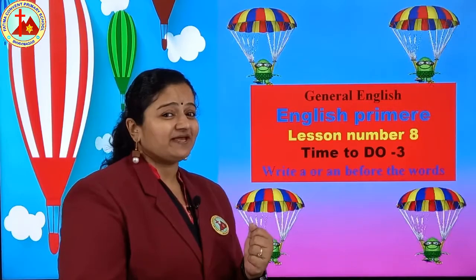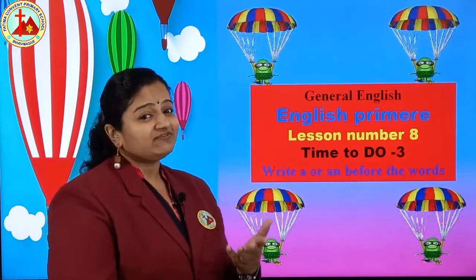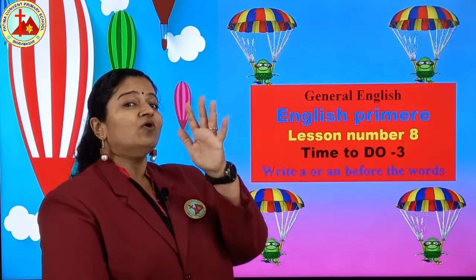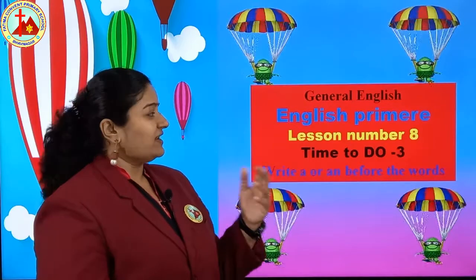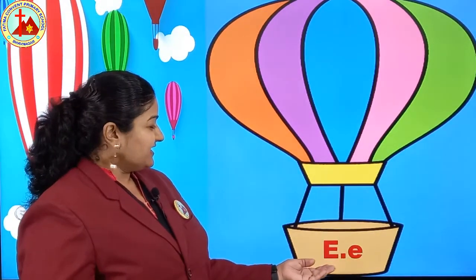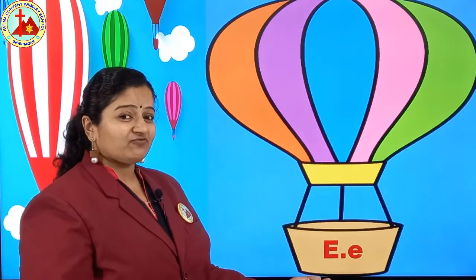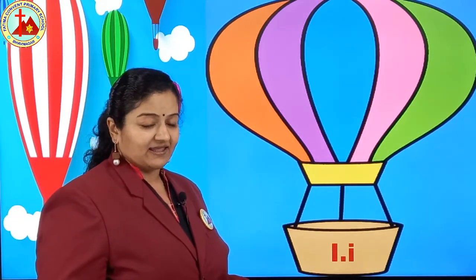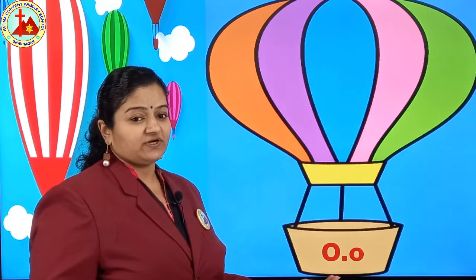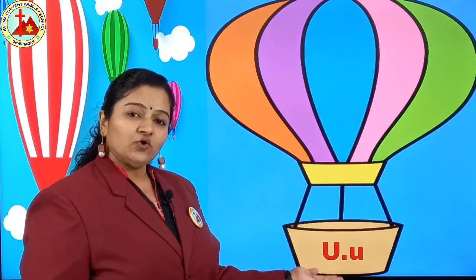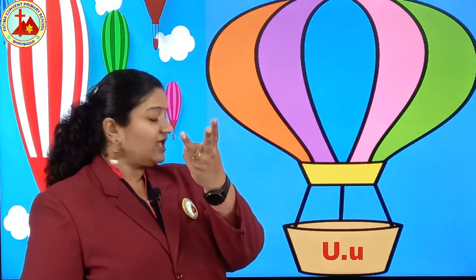Come on children, tell me — in the previous video I taught you which are the vowels. Remember, which are the vowels? A, E, I, O, U are vowels. Five vowels are there in the alphabet.